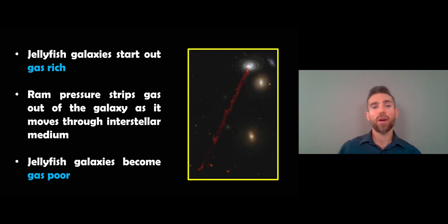The key thing to note is that these jellyfish galaxies are going to start out gas rich, so they have to have a lot of gas in them to start with. You're not really going to see an elliptical galaxy that's going to have these long tentacles because they just don't have the gas content. What happens is there's some ram pressure that strips the gas away and this occurs because the galaxy is moving through interstellar medium in the actual galaxy cluster itself, and then over time that galaxy will become gas poor, so it essentially depletes the galaxy of gas.